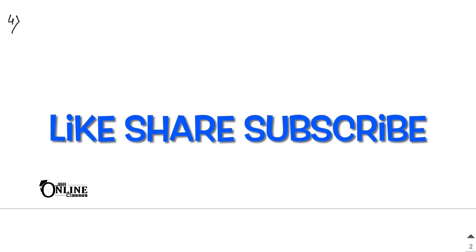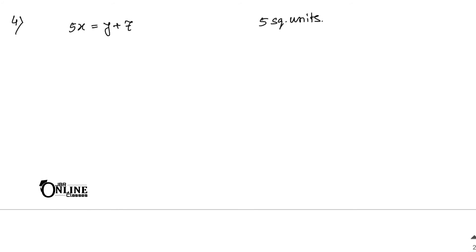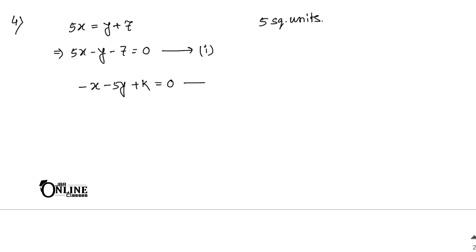Sum number four — the last sum for this video. Please like, share and subscribe. A line is drawn perpendicular to 5x = y + 7; find the equation of the line if the area of the triangle formed with the coordinate axes is 5 square units. The given line is 5x - y - 7 = 0. The family of perpendicular lines is -x - 5y + k = 0.